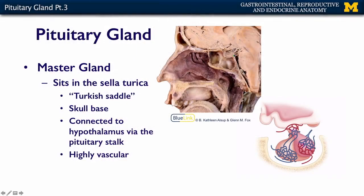We're talking about the pituitary gland, and we just talked about the posterior lobe. Now we're going to talk about the anterior lobe, but I want to put everything back in context again — the pituitary is sitting here in the sella turcica, which is also diagrammed here in the illustration, and to highlight that vascularity. It's the master gland, connected to the brain via the pituitary stalk, and in this section we're going to talk about the anterior lobe of the pituitary gland.